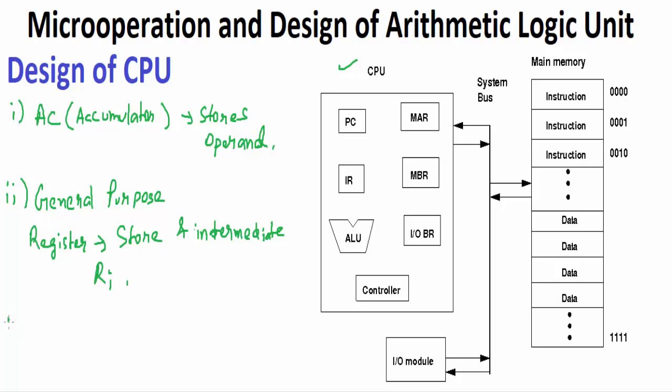Next we have special purpose registers which contains almost seven registers. The first one is PC or program counter. Program counter is used to store the address of the next instruction to be executed. This is important to remember.